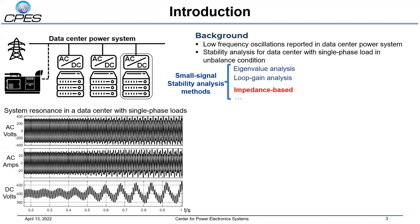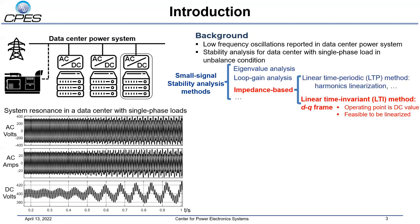There are different kinds of methods for stability analysis, including eigenvalue analysis, loop-gain analysis, and impedance-based analysis. The impedance-based stability analysis method is widely adopted because the system internal parameters are not required in practice. This method can also be divided into two kinds: the linear-time periodic method, such as harmonics linearization, and the linear-time invariant method based on rotating DQ frame. The related theories of both kinds are well developed for three-phase balanced systems. For three-phase unbalanced systems or balanced systems with single-phase load analysis, based on the LTI theory, this paper adopts the virtual DQ frame modeling method.